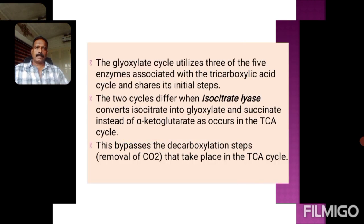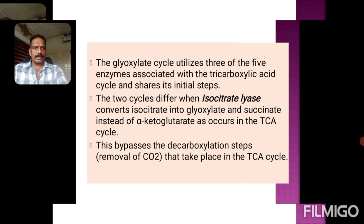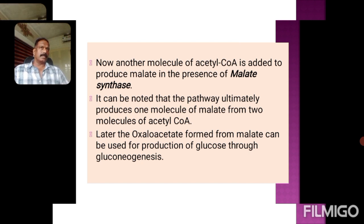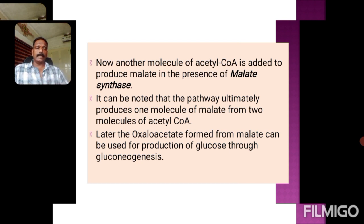Just a recap: the glyoxylate cycle utilizes three of the five enzymes used in the TCA cycle, but has two key unique enzymes — isocitrate lyase and malate synthase. This cycle is especially important in germinating seeds because they store oil, fat, and lipids — the best form of storage energy. This lipid can be used for the synthesis of glucose, and the energy needs during seed germination can be met by following the glyoxylate cycle.